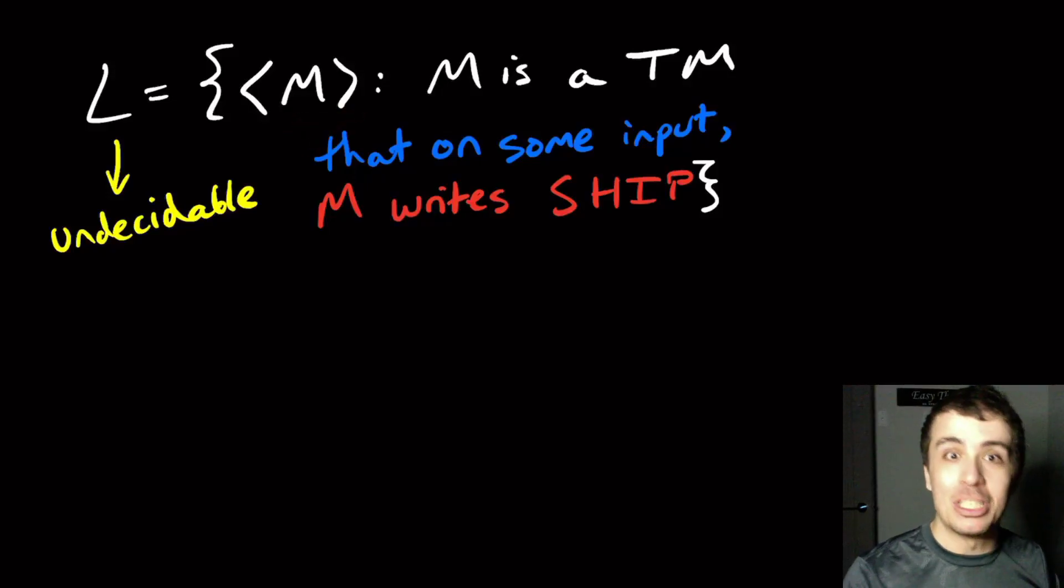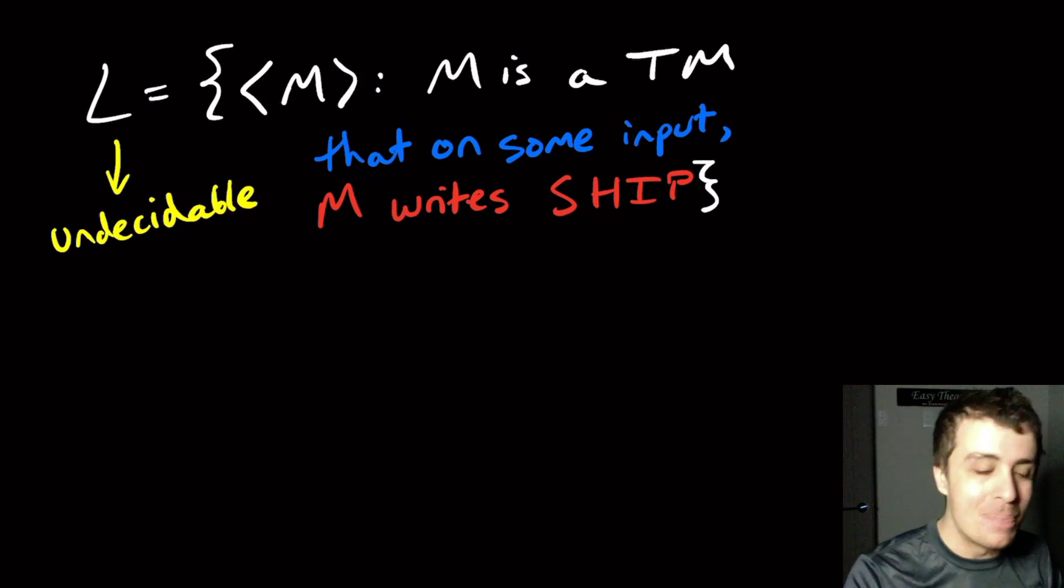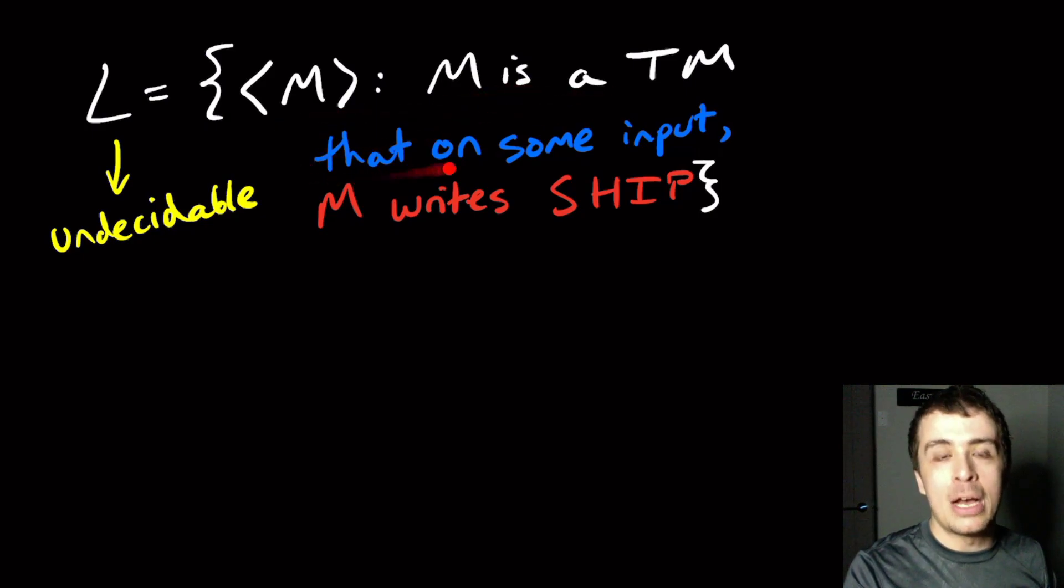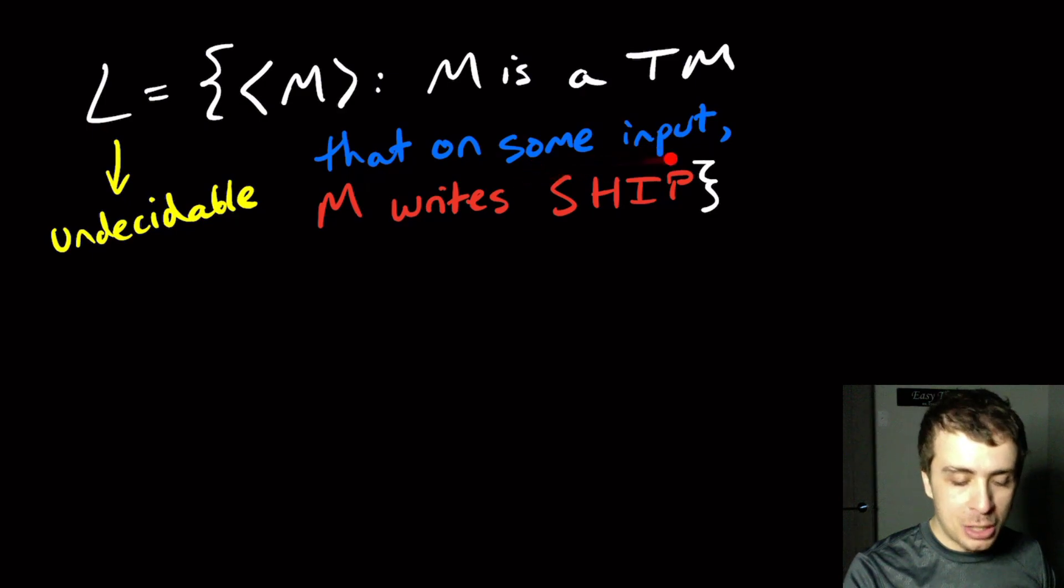I want to figure out whether my Turing machine is ever going to figure out whether a ship is stuck or not. We always want to know whether our ships are going to be stuck at some point. The problem that I'm claiming to be L is the set of all Turing machines such that on some input, it doesn't matter what the input is, on some input the machine writes the word ship.